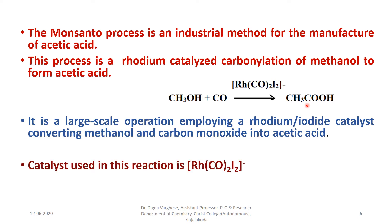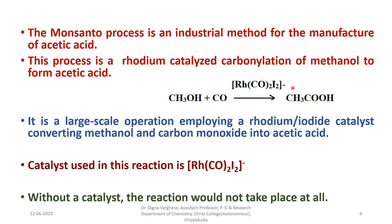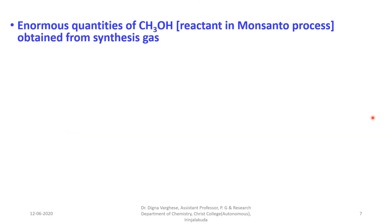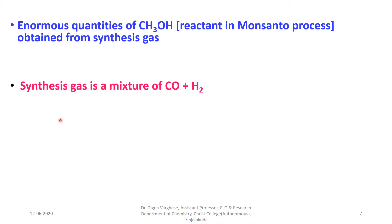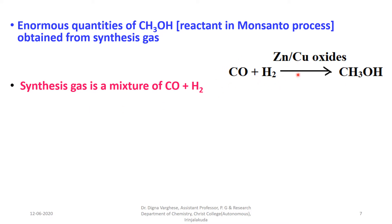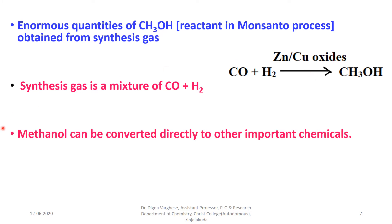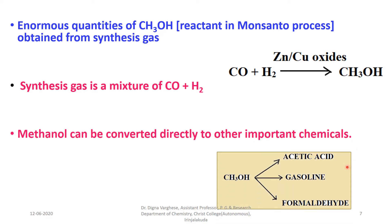The catalyst used in this reaction is [RhCO₂I₂]⁻. Without using a catalyst, the reaction would not take place at all. Enormous quantities of methanol are obtained from synthesis gas. Methanol is the reactant in the Monsanto acetic acid process. Methanol synthesis gas is a mixture of carbon monoxide and hydrogen. Carbon monoxide and hydrogen undergo a catalytic reaction giving methanol; the catalyst used in this process is syngas copper oxides. Methanol can also be converted to other important chemicals such as acetic acid, gasoline, or formaldehyde.